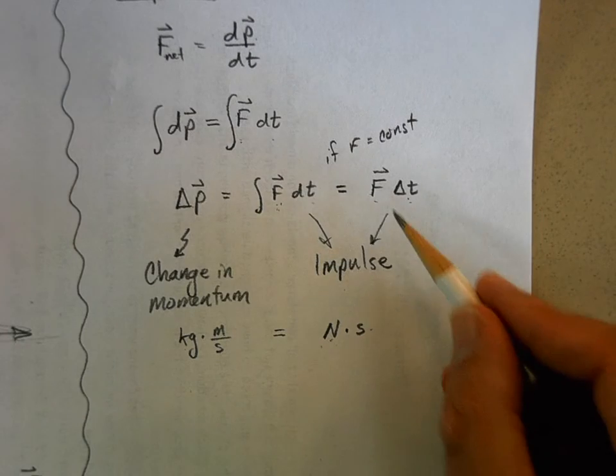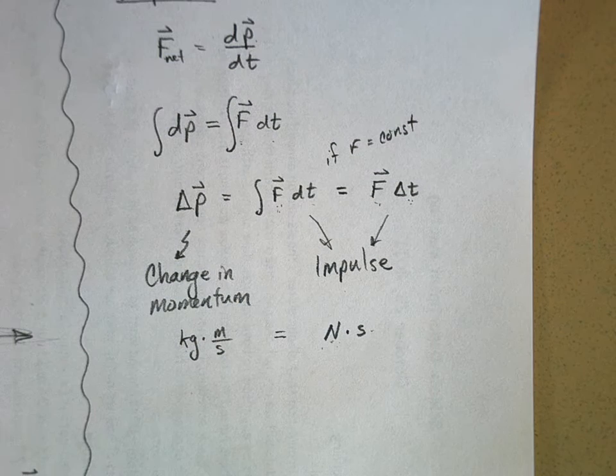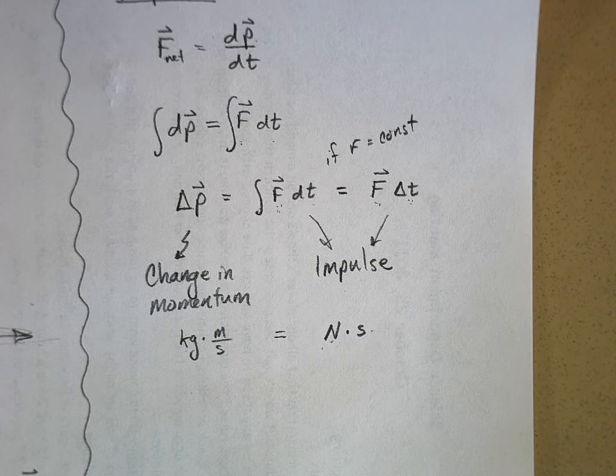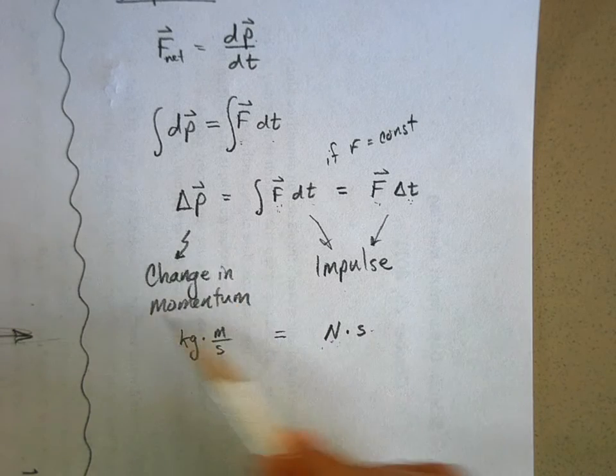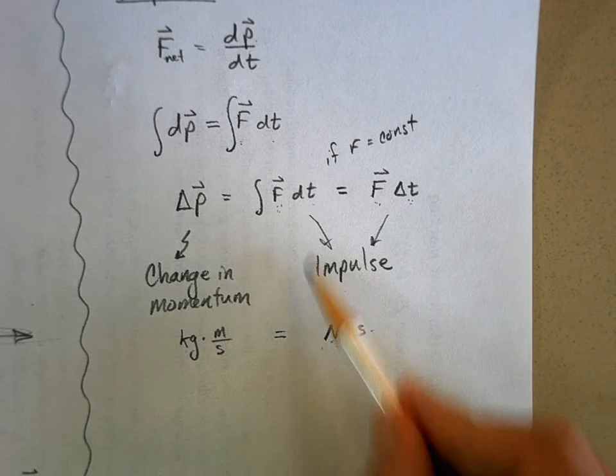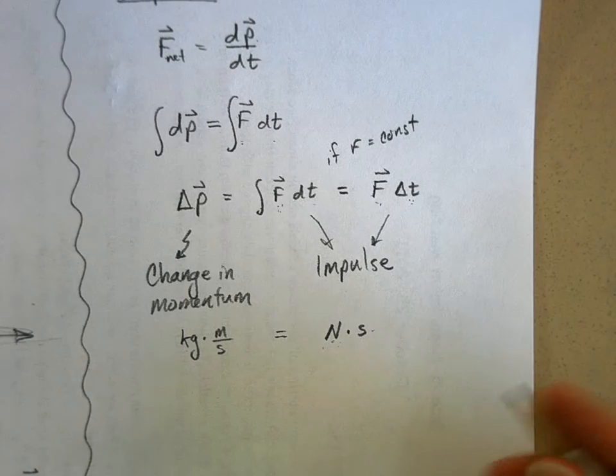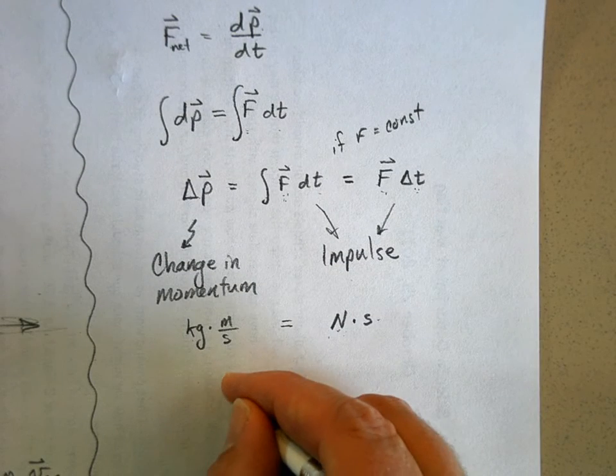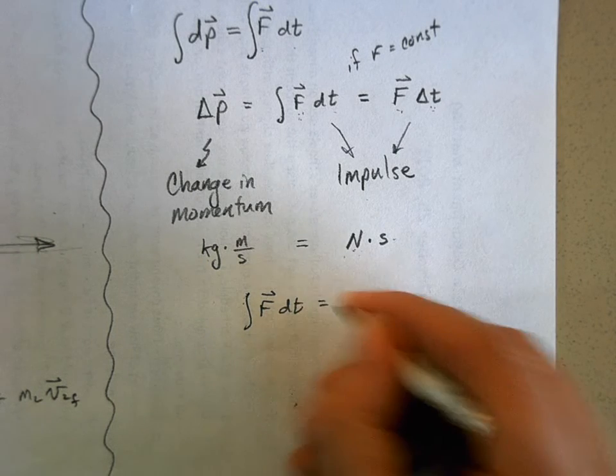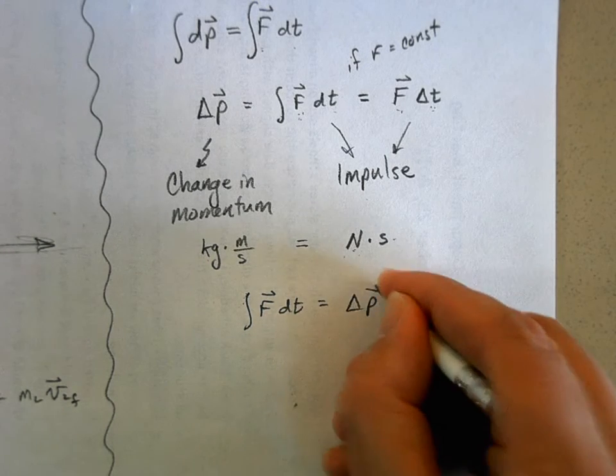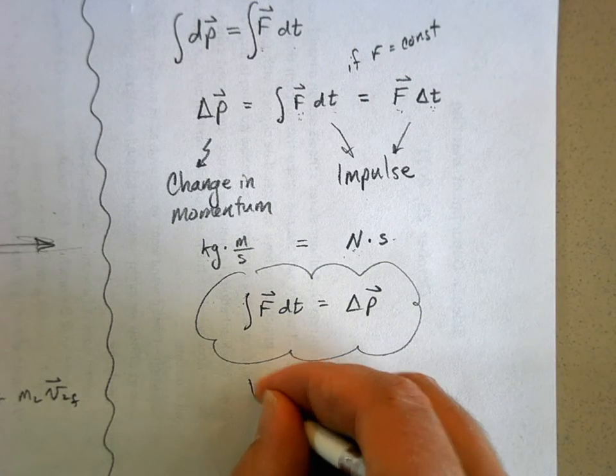Here's what this is saying: if you apply a net force to an object for a period of time, you're going to change that object's momentum. And this right here, that a change in momentum is exactly equal to the impulse applied to that object, that's called the impulse momentum theorem. I'll rearrange this a little bit: integral of F dt is equal to the change in momentum. This is a big idea. This is called the impulse momentum theorem.